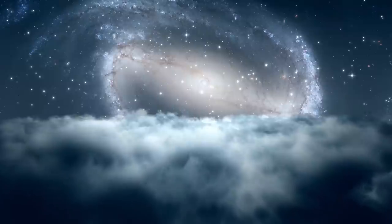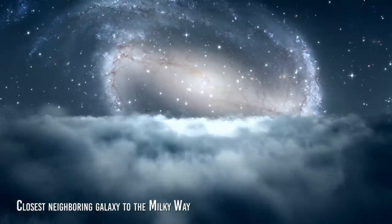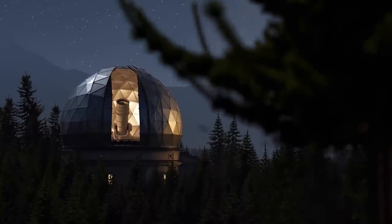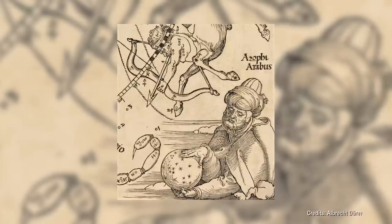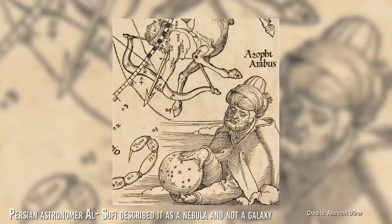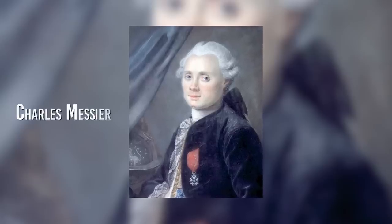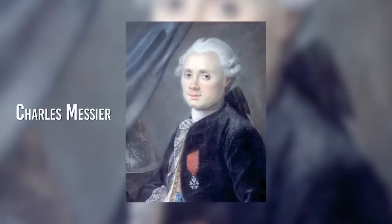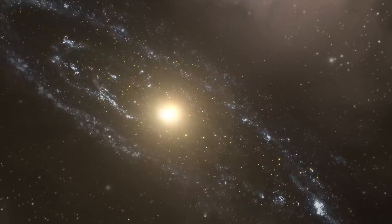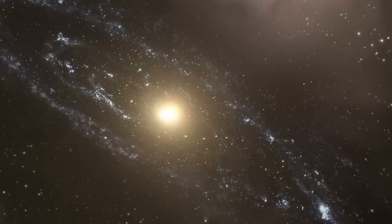The Andromeda Galaxy, the closest neighboring galaxy to the Milky Way. This galaxy has been studied and observed since ancient times. In his writings in the 10th century, the Persian astronomer Al-Sufi described it as a nebula and not a galaxy. In the 18th century, Charles Messier included it in his catalogue of celestial objects. The discovery that the Andromeda Galaxy is a galaxy and not a nebula was a breakthrough in understanding the universe and changed our world view.